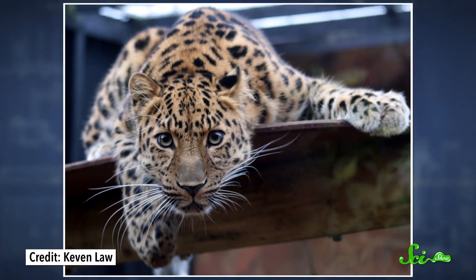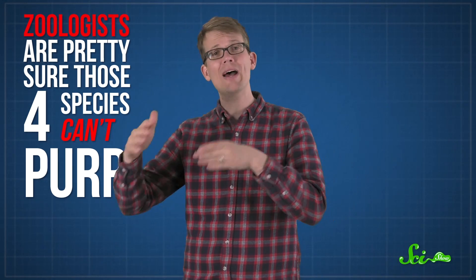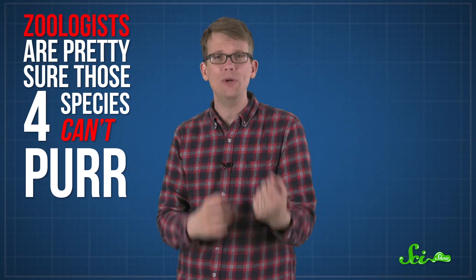But domestic cats cannot roar. Only four species in the cat family can — lions, tigers, leopards, and jaguars. Here's the weird thing, though. Zoologists are pretty sure that those four species of cats can't purr. So even though my cat can't roar, the reason probably has a lot to do with the things in her throat that let her purr.